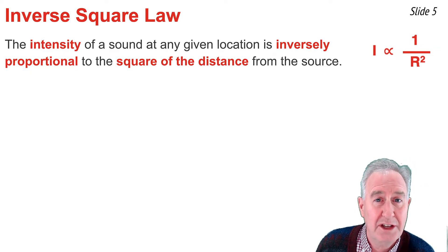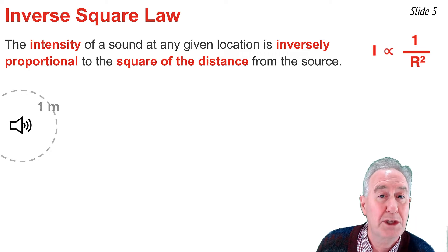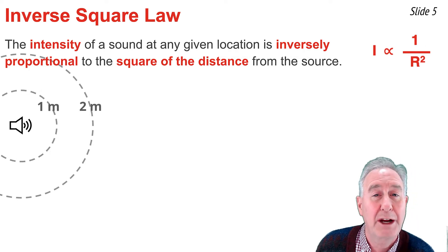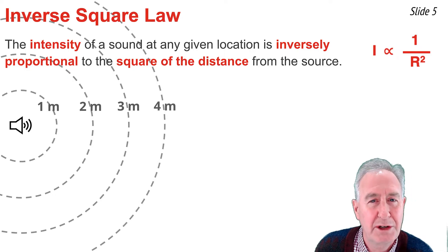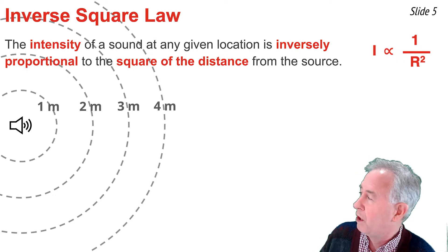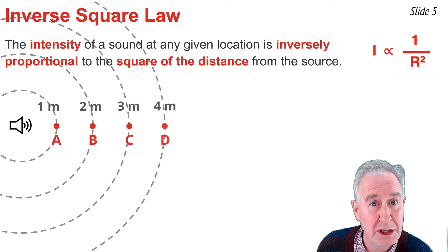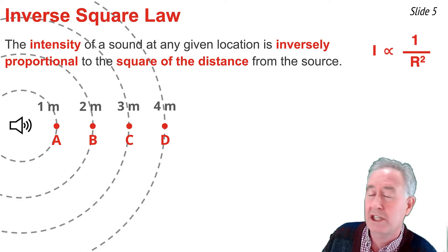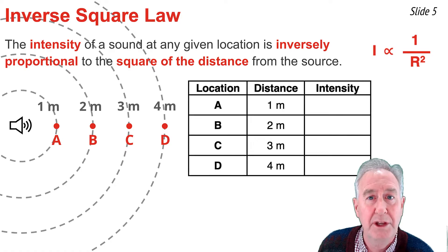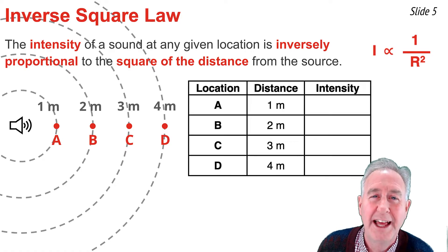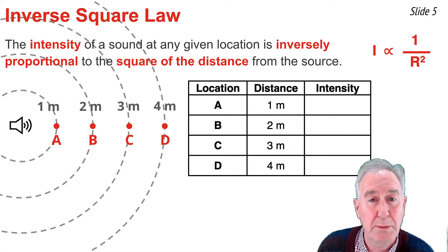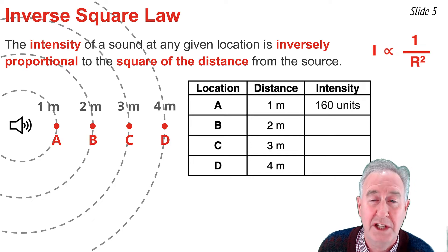To illustrate the concept, let's consider a speaker that transmits energy into the medium, spreading over a spherical surface area that grows over time. Let's consider four different spheres having radii of 1, 2, 3, and 4 meters, and pick a point on each — labeling them A, B, C, and D. I'm going to create a table to illustrate the so-called inverse square law, with points A through D and their respective distances from the source. Suppose at location A the intensity is 160 generic units.